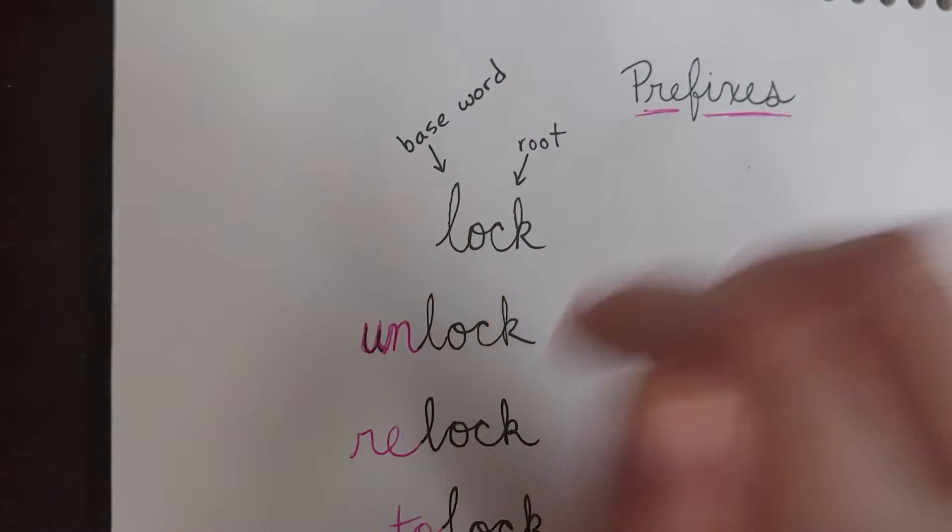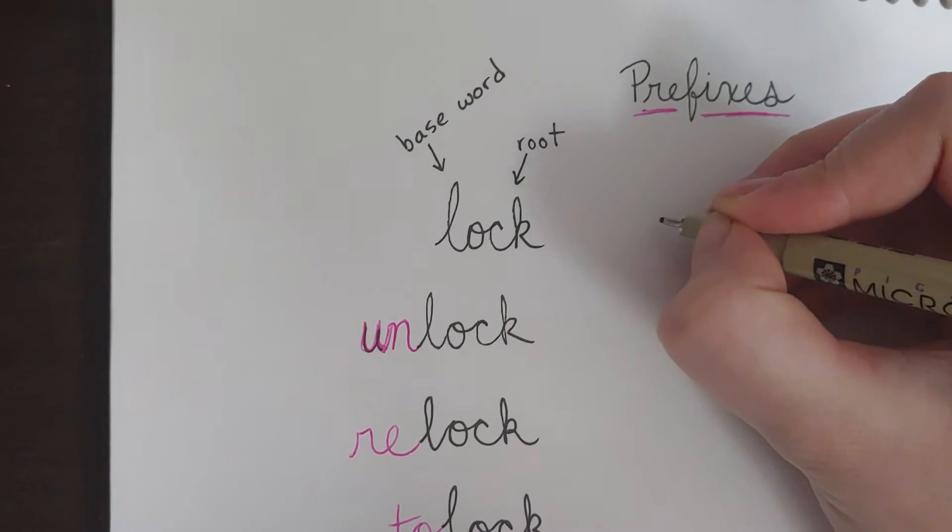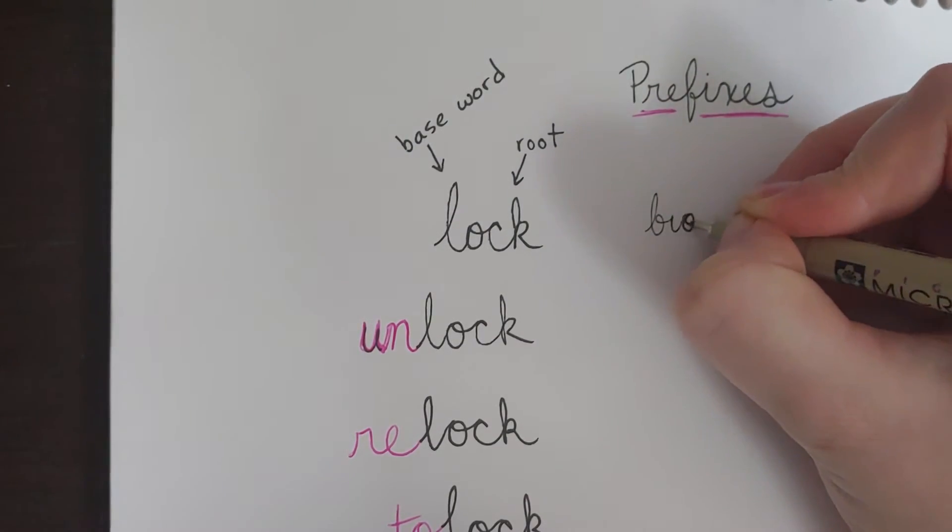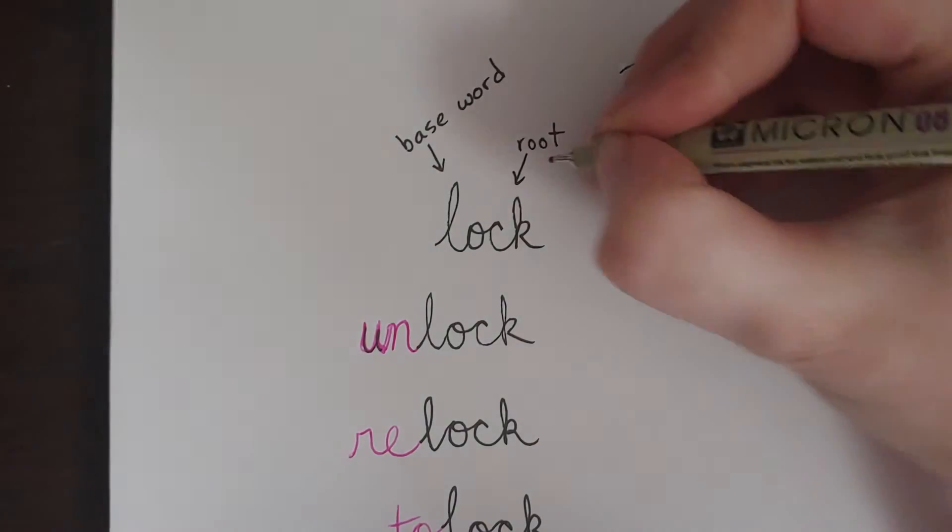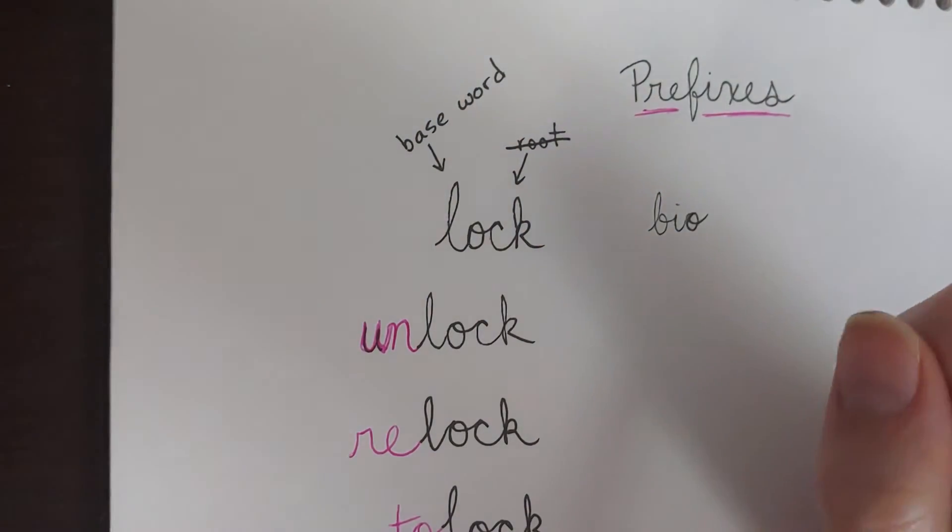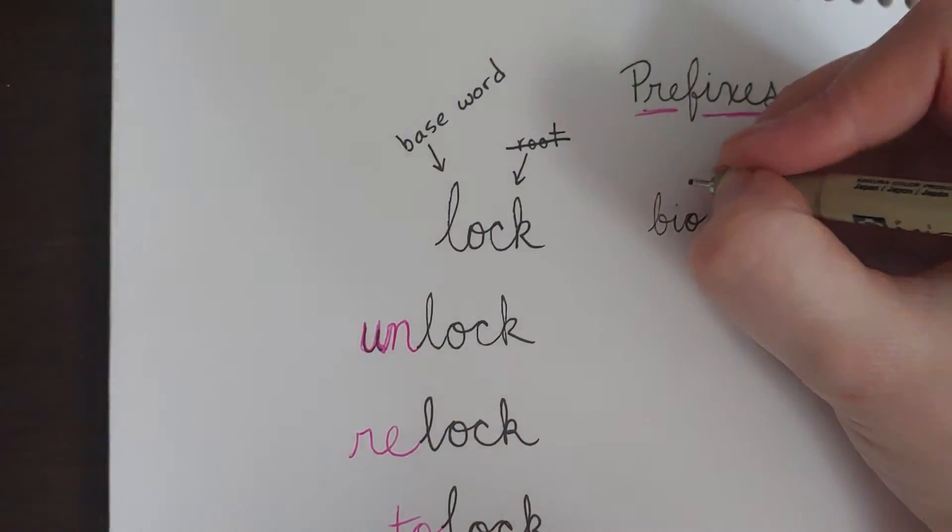If it's something that can't stand on its own, like for instance when we say bio as in biology, that would be a root. Lock can stand on its own, so it's a base word instead of a root.